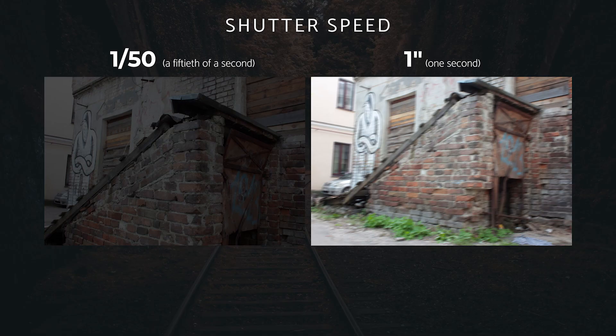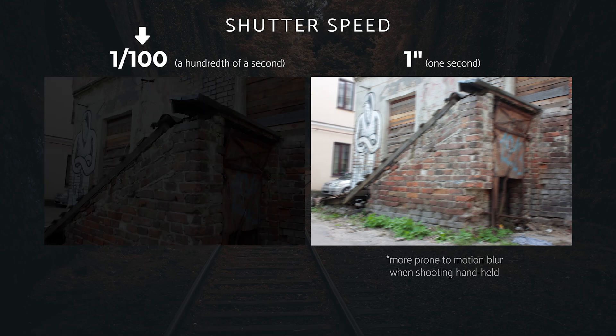The important thing to understand about shutter speed is that it's measured in seconds or fractions of a second, and at first it can be slightly tricky to interpret the numbers after the division sign or slash symbol. The higher the number after the division sign, the less time the shutter remains open. So 1/15th of a second is actually 2 times slower and 2 times brighter than 1/100th of a second. And obviously 1 second is much much slower and brighter than 1/100th.